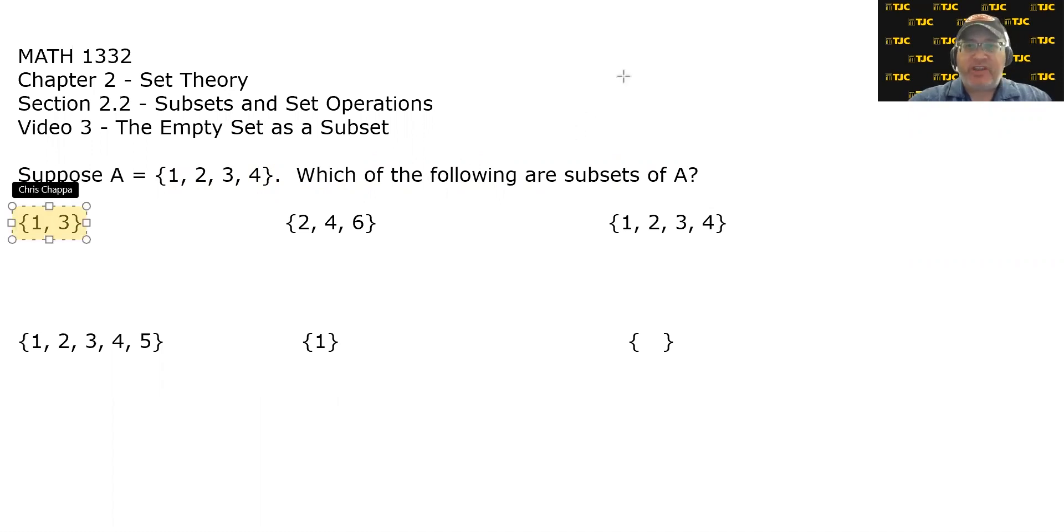Let's start with one and three, the set containing one and three. To answer the question, are you a subset of A, we simply have to look at each of its elements and ask it a question. Element number one, do you belong in A? The answer is yes. Element three, do you belong to A? Yes, it does. Since every element of this set belongs to A, that means that this set is a subset of A.